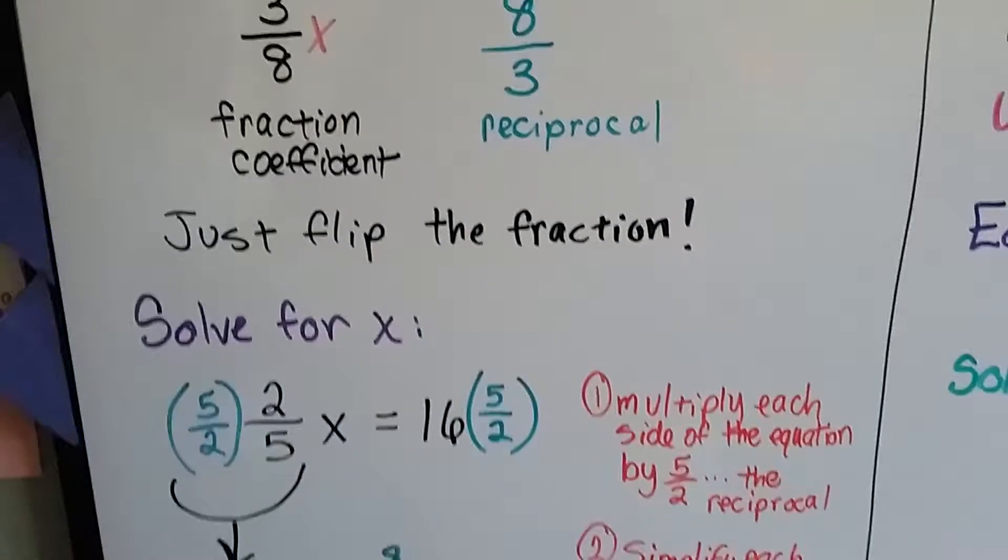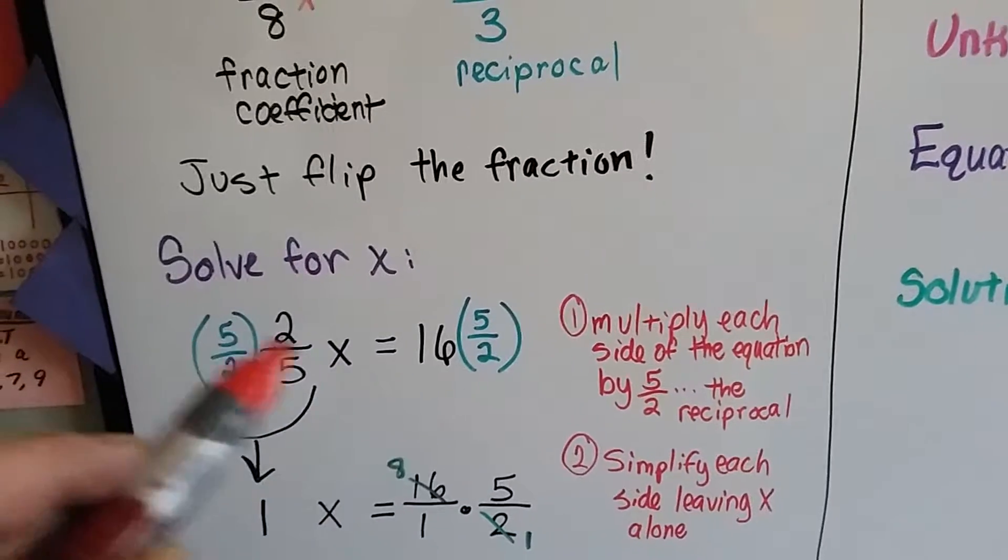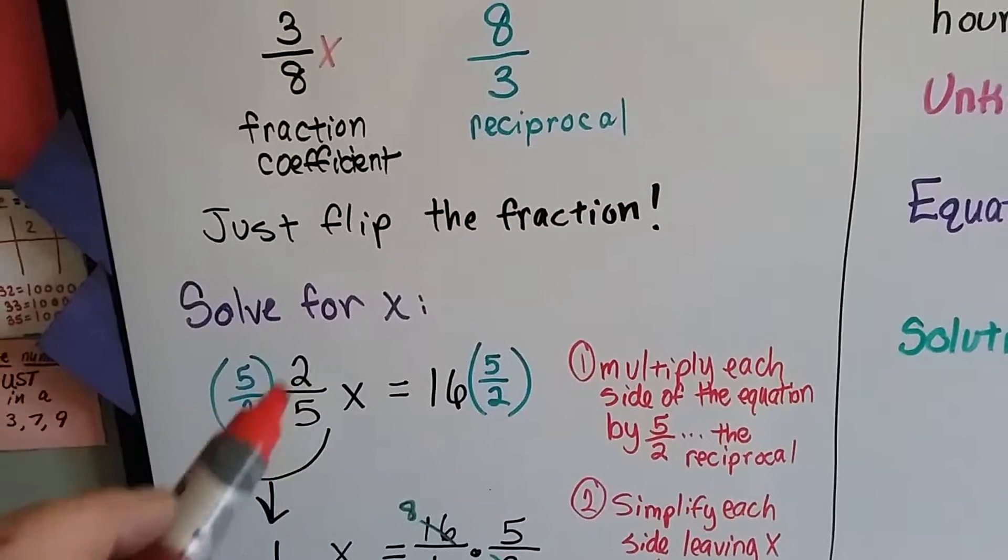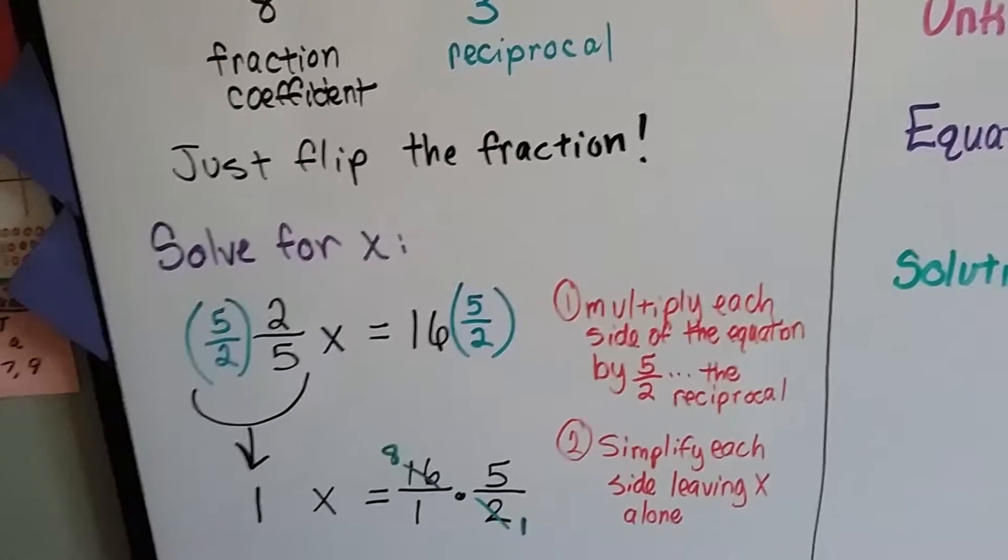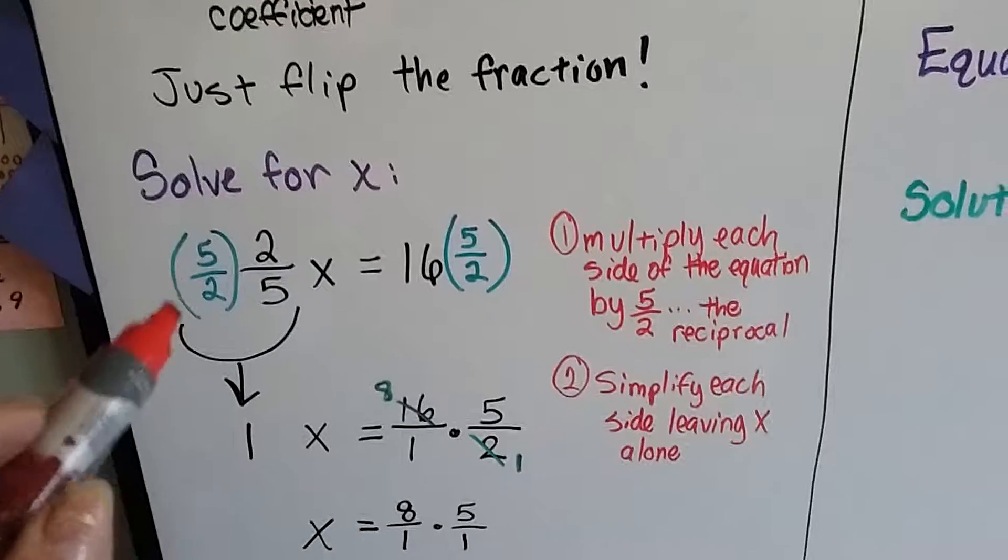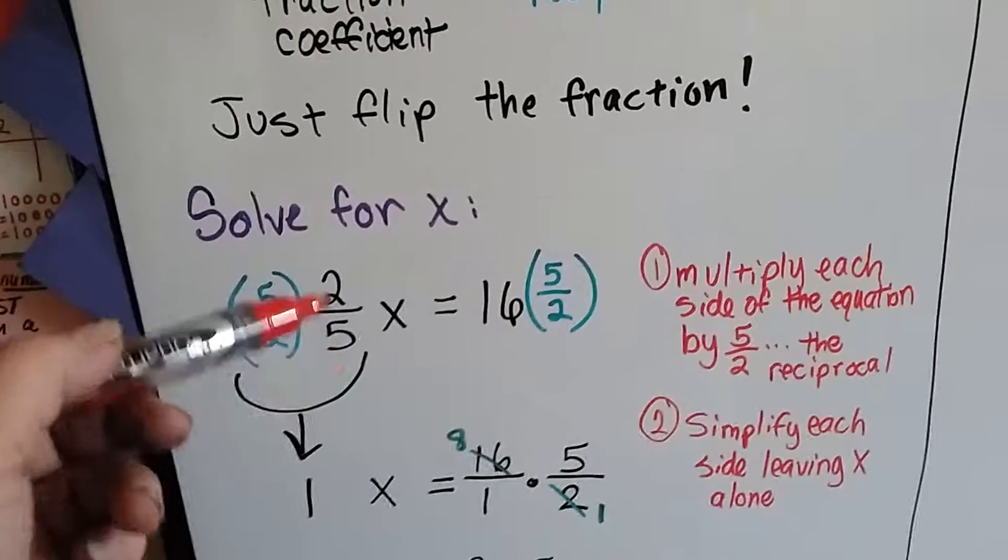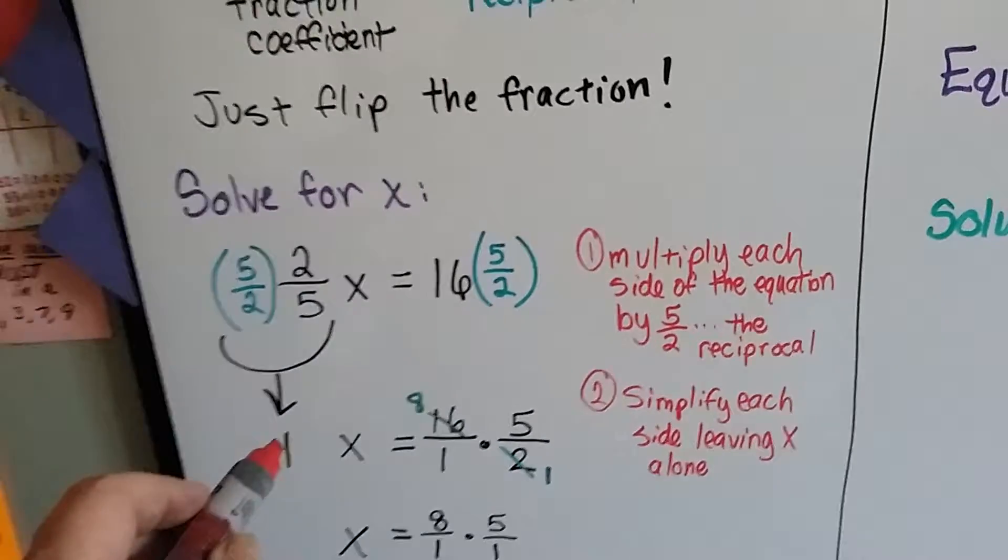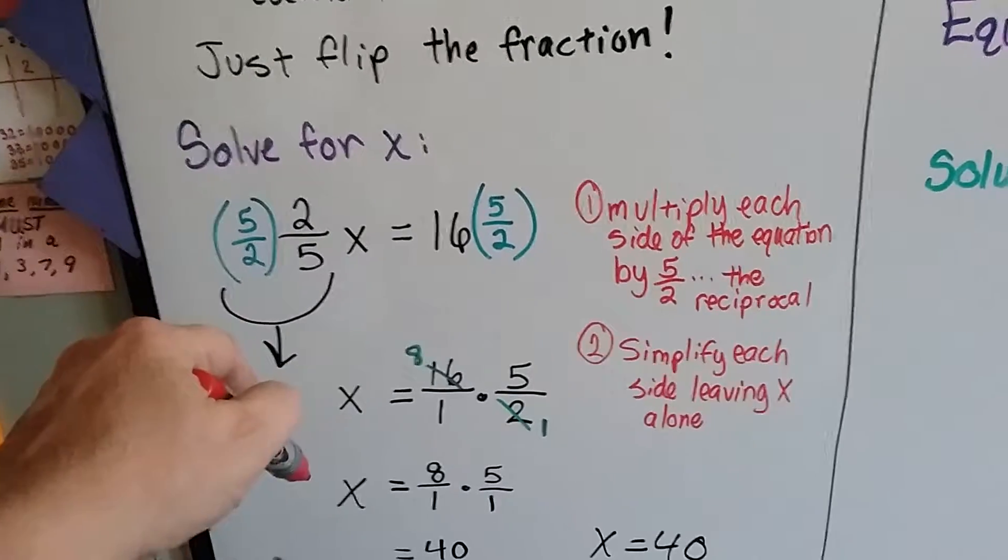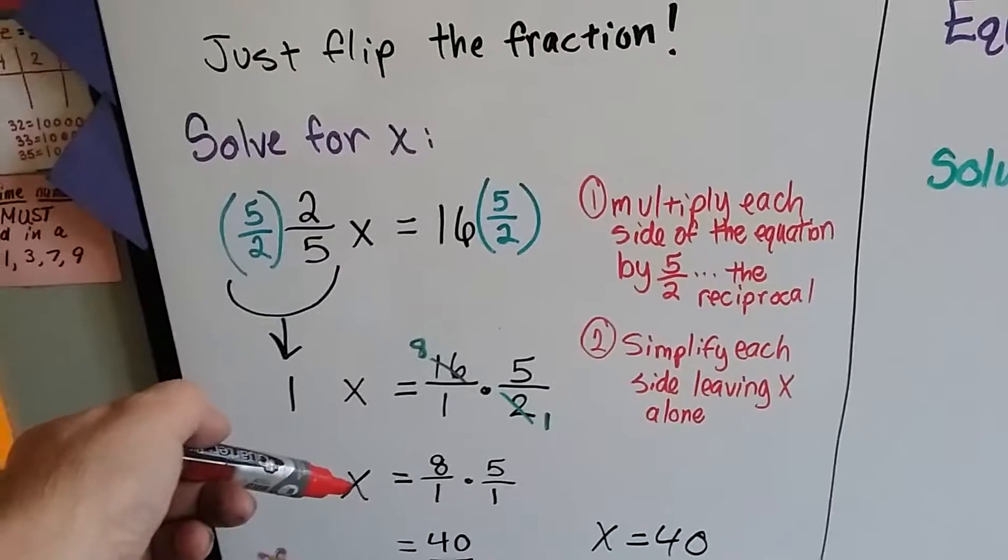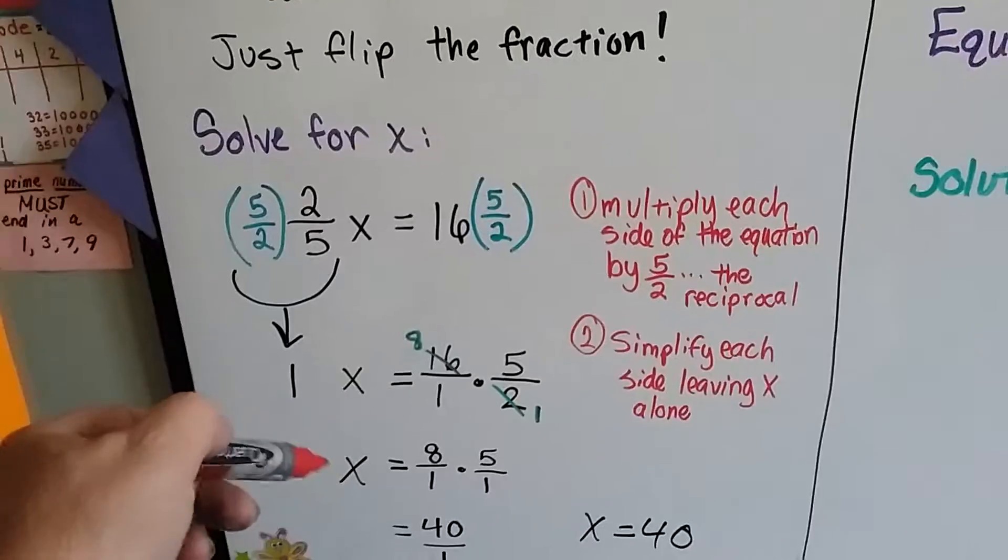So to solve for x, if we have 2 fifths x equals 16, we put the reciprocal, the upside down version of the fraction, on each side and multiply each side of the equation by that reciprocal. When you multiply 5 times 2, you get 10, and 2 times 5, you get 10. You get 10 over 10, so that's a 1. And you remember what happens when we have a 1 in front of a variable? We don't write it, because we can see there's only one x. Just tell me if there's two or more, or one and a half, or something like that. But when there's just one, you don't need to tell me.